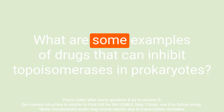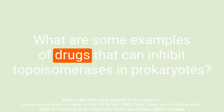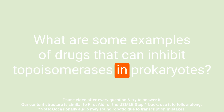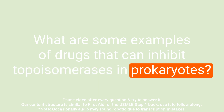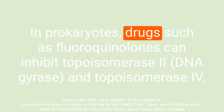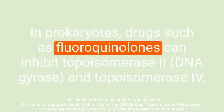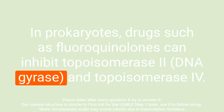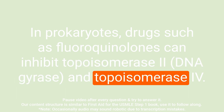Question: What are some examples of drugs that can inhibit topoisomerases in prokaryotes? Answer: In prokaryotes, drugs such as fluoroquinolones can inhibit topoisomerase II and topoisomerase IV.